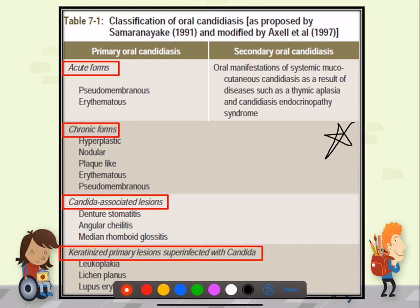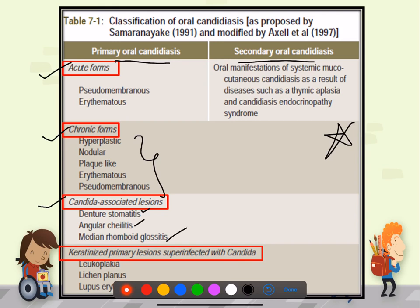The classification of oral candidiasis includes primary and secondary types. Primary candidiasis has acute and chronic forms. Chronic forms include candida-associated lesions such as denture stomatitis, angular cheilitis, and median rhomboid glossitis, as well as keratinized lesions superinfected with Candida like leukoplakia, lichen planus, and lupus erythematosus. Secondary oral candidiasis involves systemic mucocutaneous candidiasis, mostly due to endocrinopathy syndrome.